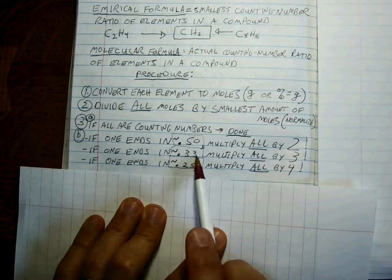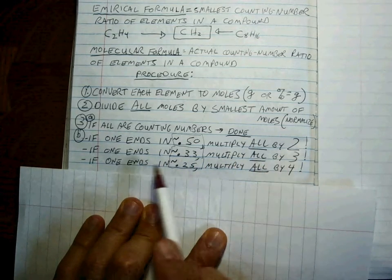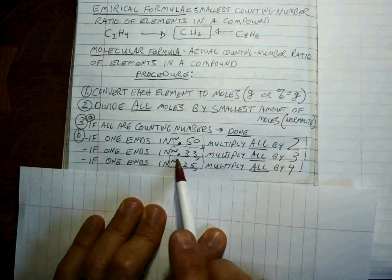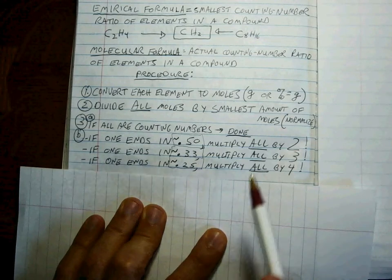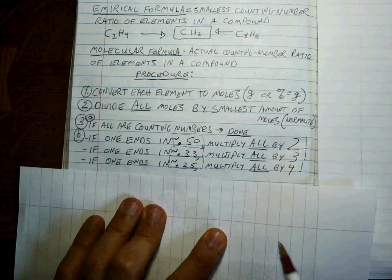If it ends in 0.33, you want to multiply all by 3. And if it ends in 0.25 or something close, multiply all by 4. It's a lot easier whenever we do it than to describe it, so let's do some.